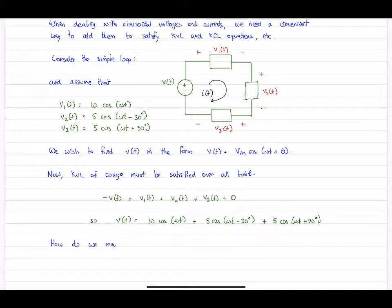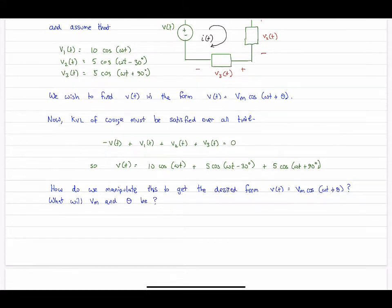And here's KVL around the loop. So no surprises there. So what we're doing is we're solving for V(t), that's the voltage across the source, sum of the individual voltages across each of the other circuit elements. So then the problem is, how do we manipulate that thing? It's certainly not obvious by looking at it. So we need help. Because we want to express this thing in the form of a single cosine wave. And so then the question becomes, well, okay, how do we find VM and how do we find theta, a single value for each.